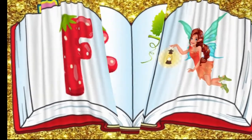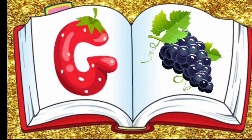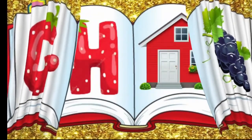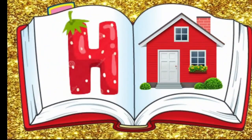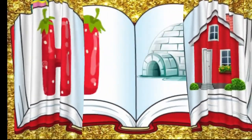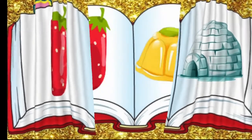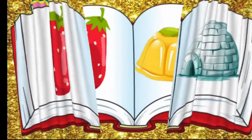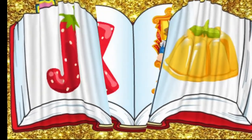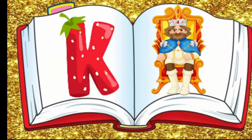G for grapes, H for house, I for igloo, J for jelly, K for king.